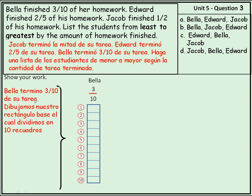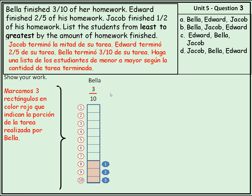Bella terminó tres décimos de su tarea. Dibujamos nuestro rectángulo base, el cual dividimos en diez recuadros. Aquí tenemos el rectángulo base dividido en diez cuadritos: uno, dos, tres, cuatro, cinco, seis, siete, ocho, nueve, diez. Marcamos tres rectángulos en color rojo que indican la porción de la tarea realizada por Bella. El rectángulo representa una tarea. Ella logró hacer tres décimos de la tarea — tres cuadritos de diez.